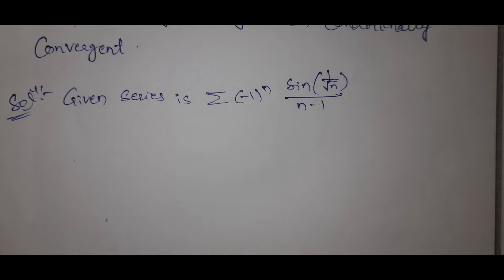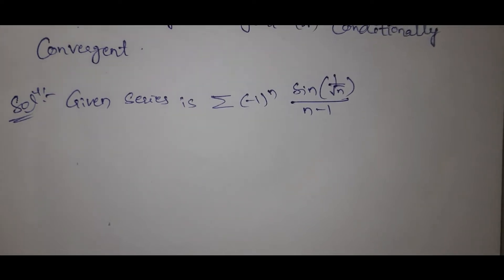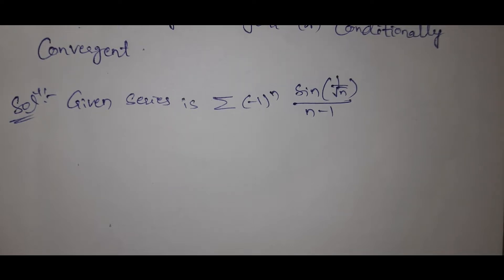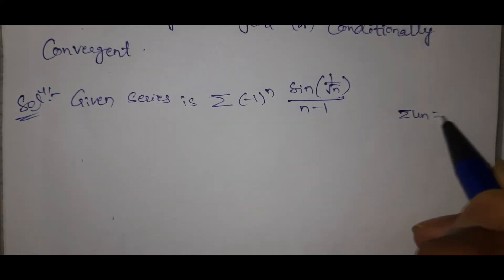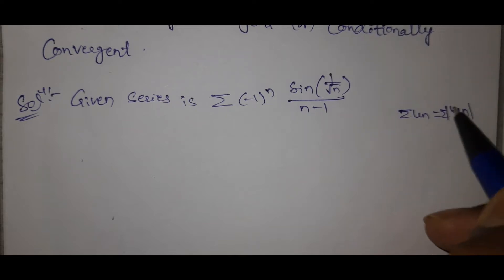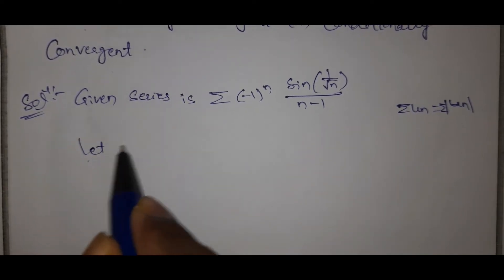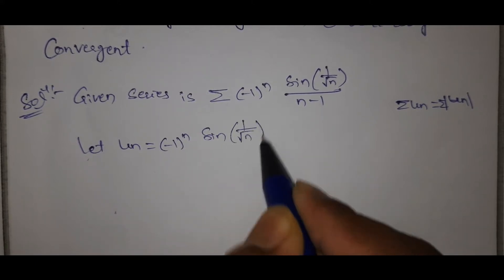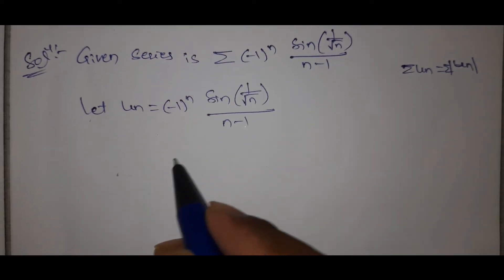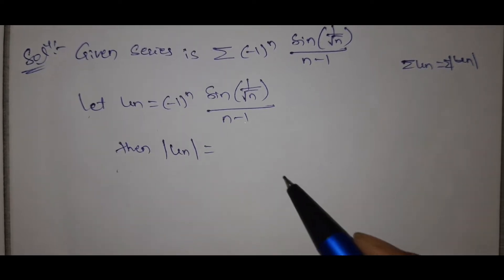Summation u_n is a series of positive terms, then summation u_n equals summation |u_n|. So summation |u_n| is equal to summation |(-1)^n · sin(1/√n) / (n-1)|. Since (-1)^n is always ±1, its modulus is always positive.